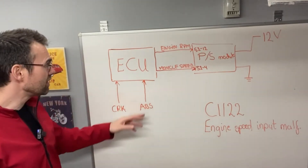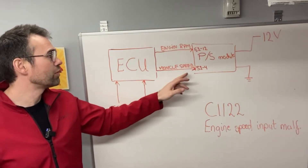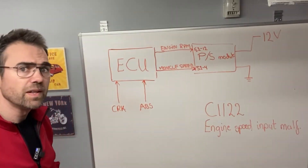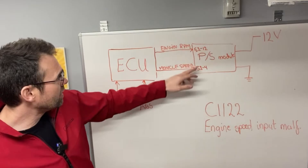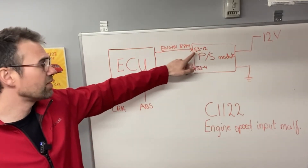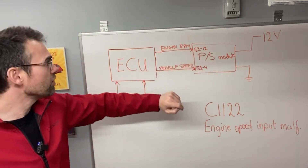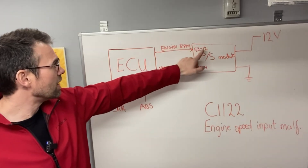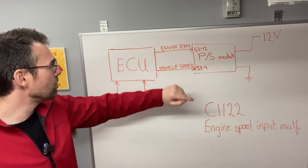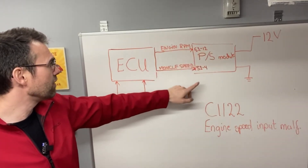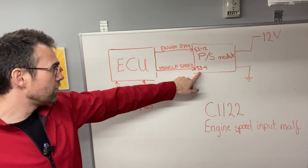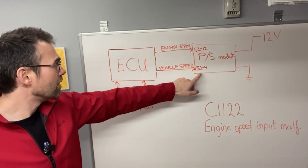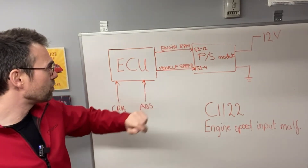This signal the ECU transmits as well to the power steering control module. I have also written down the wire terminals it's coming in on. So we have connector 52, pin 12 - that's the engine RPM. And connector 52, the same connector, pin number 4 - that's the vehicle speed.